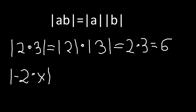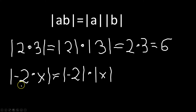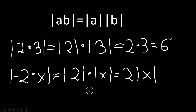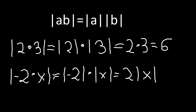Let's do another one: absolute value of negative 2 times x. The rule states you can distribute the absolute value — you get the absolute value of negative 2 times the absolute value of x. Negative 2 gets its own bars and x gets its own bars. That gives you 2 times the absolute value of x, since |−2| = 2. The absolute value of x must remain because we don't know whether x is positive, negative, or zero. For example, if x is 5, this is 2×5=10; if x is −5, you take the absolute value first, then multiply by 2 to still get 10.